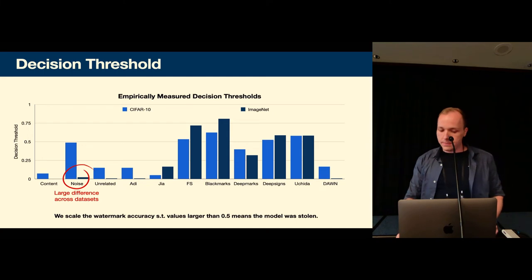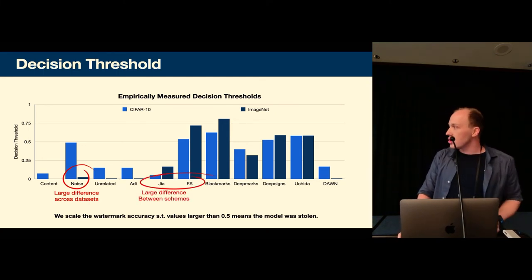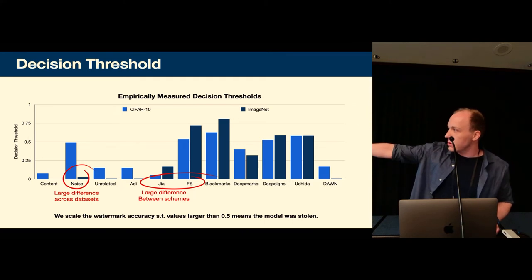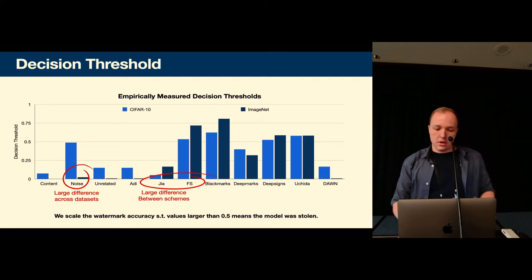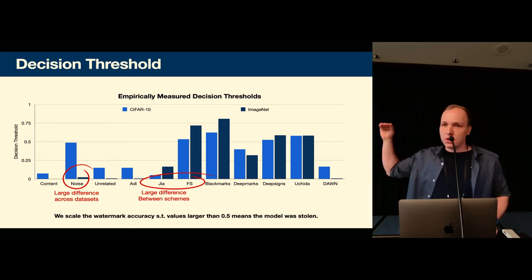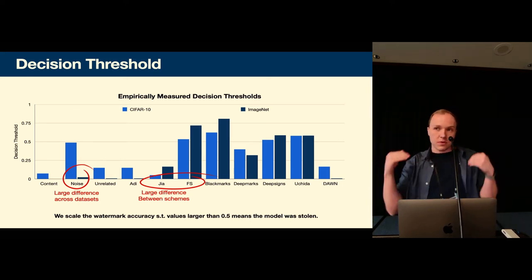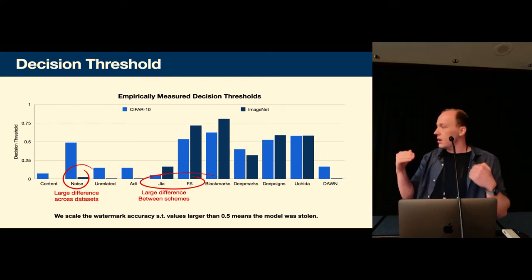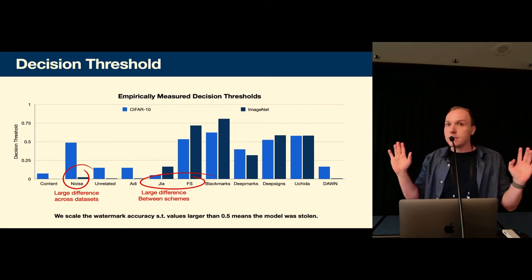So here GR has a very low decision threshold whereas frontier stitching or FS has a very high one. So now we take all these values and in order to compare the schemes with each other we scale all the values according to this decision threshold to 0.5. Meaning if we measure watermark accuracy lower than 0.5 or 50 percent we say that the scheme is not robust.